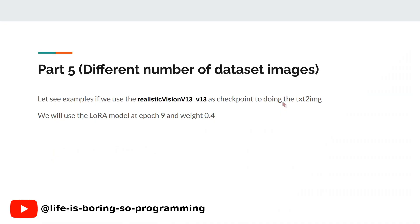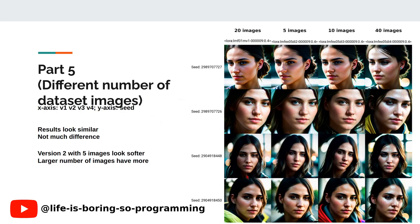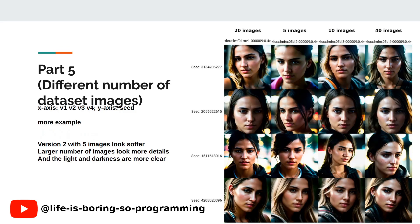We will now compare the images across all versions together. The first column is version 1 with 20 images, the second is version 2 with 5, the third is version 3 with 10, and the last is version 4 with 40 training dataset images. The results are quite similar with not much difference, but the results using 40 training dataset images show more details and better lighting. The results using just 5 training dataset images are much smoother, with less skin texture detail, while 20 and 40 images show better skin textures and clearer light and darkness.